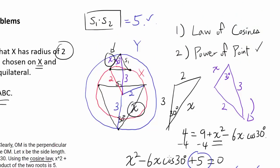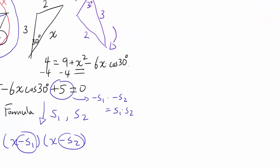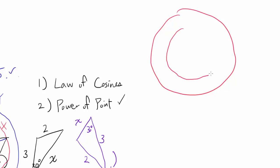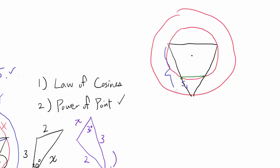Now for the second solution using power of a point by Jibaraj Shetty — very ingenious and elegant. We redraw the diagram with the large circle of radius 3 and small circle of radius 2. There is a large equilateral triangle, and we get a smaller one by drawing a line parallel to the top side. We want the triangle with two points on the smaller circle.